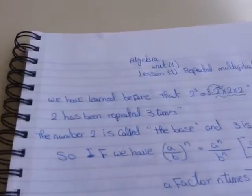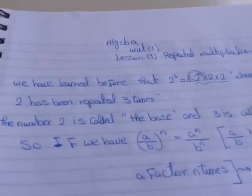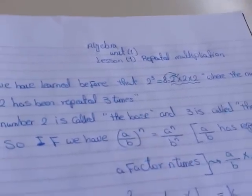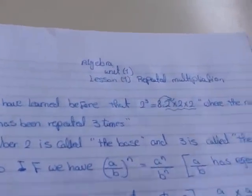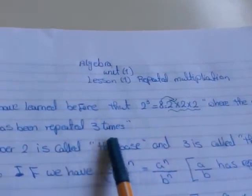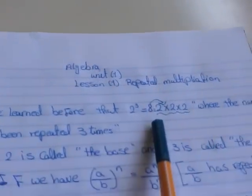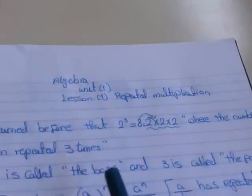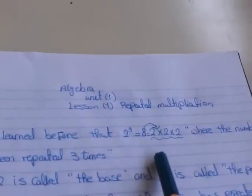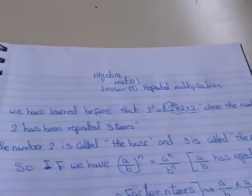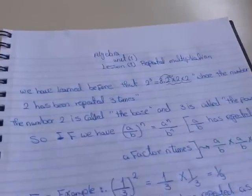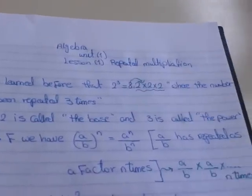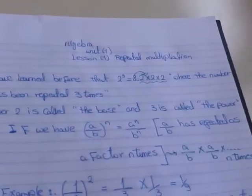My students, before we have learned that 2 power 3 equals 8. The result 8 comes from 2 times 2 times 2. So we repeated the number 2 three times. Number 2 is called the base, and 3 is called the power.